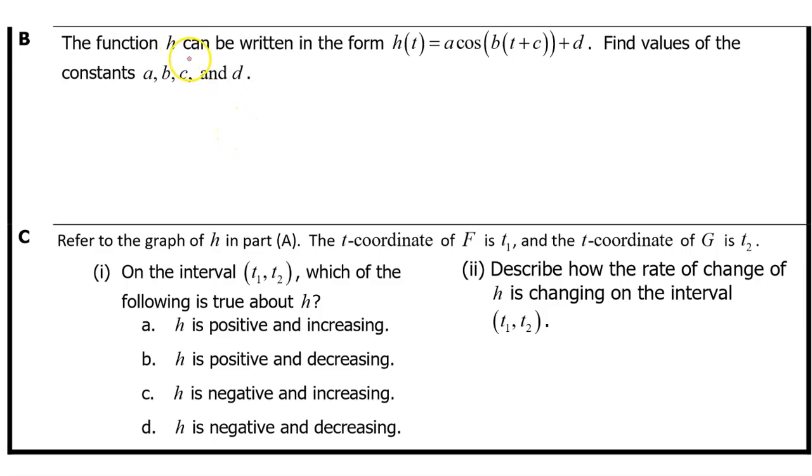Part B. The function h can be written in the form h(t) equals a times the cosine of b times t plus c plus d. Find the values of the constants a, b, c, and d.